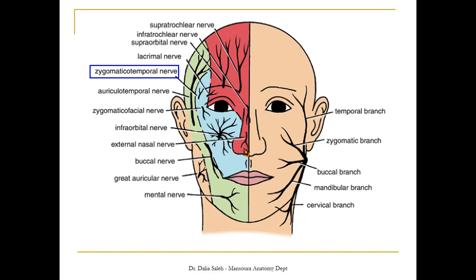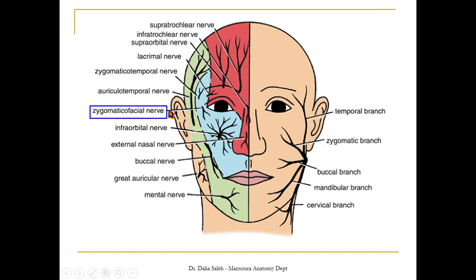The maxillary nerve gives rise to three branches. In the anterior part of the temporal region we have the zygomaticotemporal nerve, and below it lies the zygomaticofacial nerve, which supplies the area over the zygoma or cheek bone. The largest branch of the maxillary nerve is called the infraorbital nerve — it looks like a spider, giving many branches to the lower eyelid, to the side of the nose, to the upper lip, and also to the cheek.